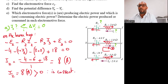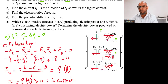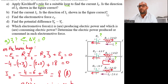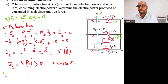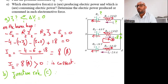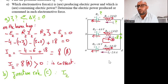Question B: find the current I1. Is the direction of I1 shown in the figure correct? I1 is located here. We know I2 is 8 amperes and I3 is 2 amperes, but we don't know I1. Applying the junction rule at point C: the sum of currents entering the junction equals the sum of currents leaving. I2 is entering the junction, while I1 and I3 are leaving. So I2 equals I1 plus I3.